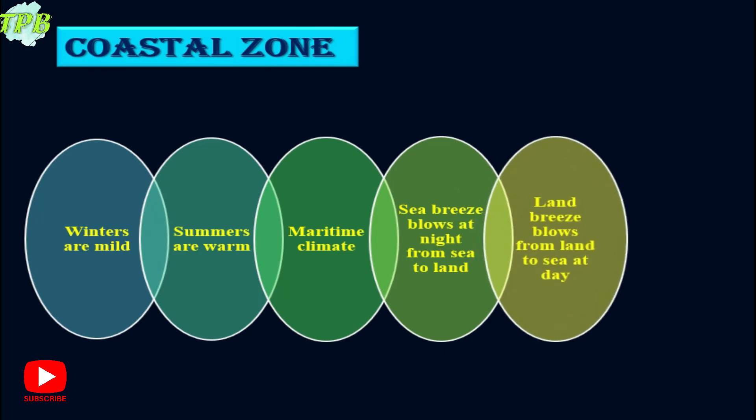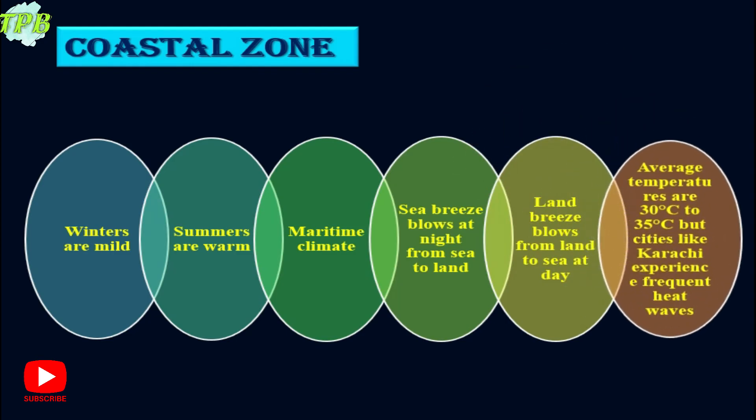This keeps and regulates the temperature of the coastal zone throughout the day. The average temperatures experienced here are 30 degrees Celsius to 35 degrees Celsius. However, cities like Karachi experience frequent heat waves because it is a very built-up city with a lot of traffic, which releases carbon and increases the heat.